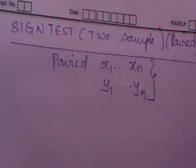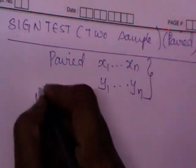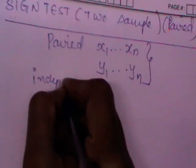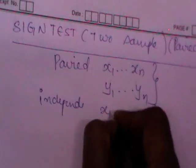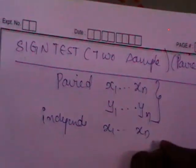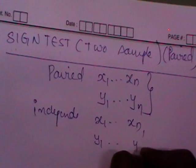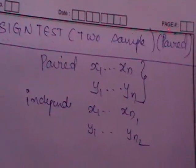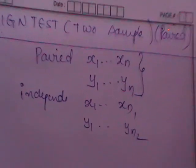Paired means equal number of observations on both the samples. Independent samples means X1, X2, ..., Xn1 and Y1, Y2, ..., Yn2, where the sizes differ. This is the difference between paired samples and independent samples.